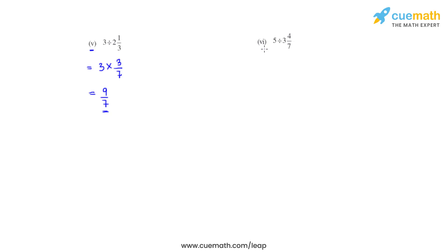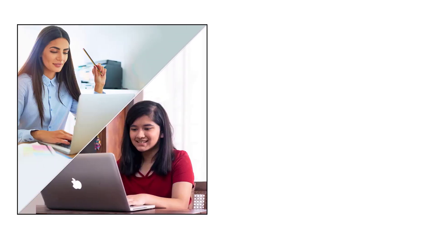Coming to the last part, which is the sixth part of this question, we have 5 which is to be divided by 3 and 4 sevenths. So improper fraction of 3 and 4 sevenths would be 25 over 7. Now to do the division we write 5 times the reciprocal of 25 over 7, which is 7 over 25. Now 5 times 1 is 5, 5 times 5 is 25, so the final answer that we get for the sixth part is 7 over 5.